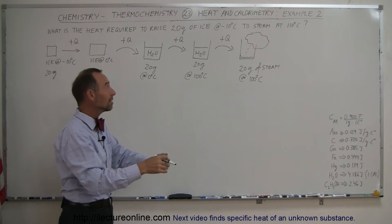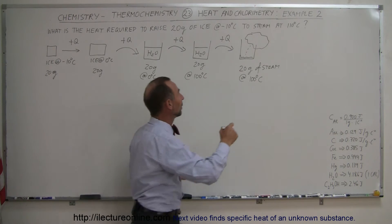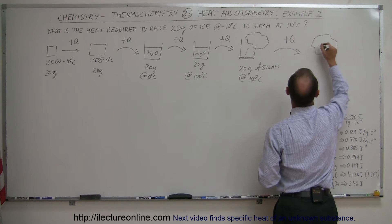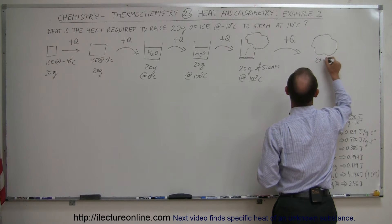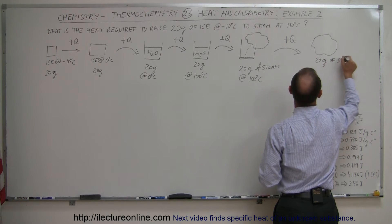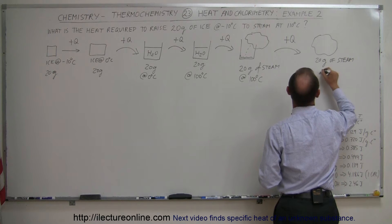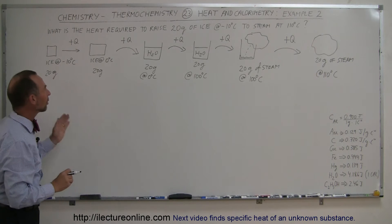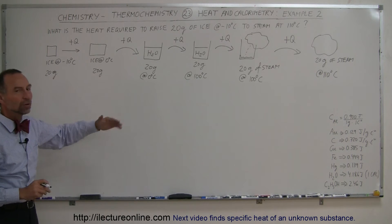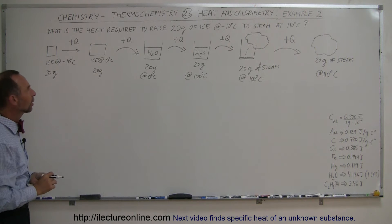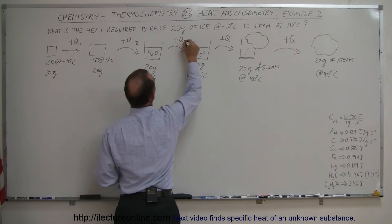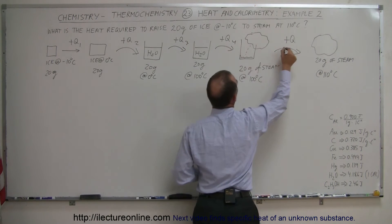Now when we continue to add more heat, the steam temperature will go up. Add some more heat, and eventually you'll end up with 20 grams of steam at 110 degrees centigrade. So how much heat does that all require? Whenever we simply are changing the temperature of a substance, we use the MC delta T equation. We'll call these steps Q1, Q2, Q3, Q4, and Q5 — adding heat in five steps.